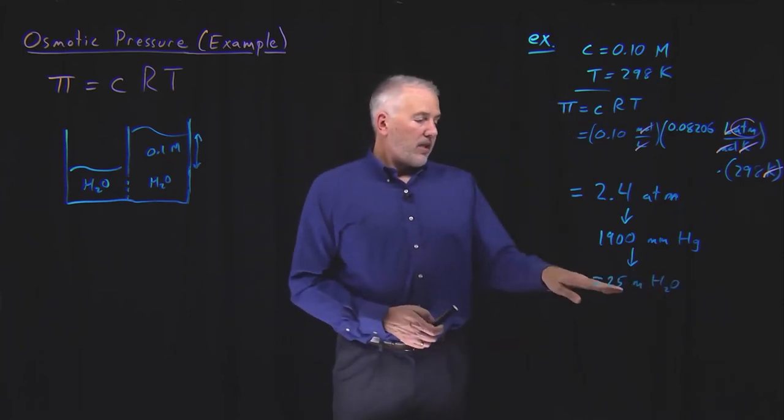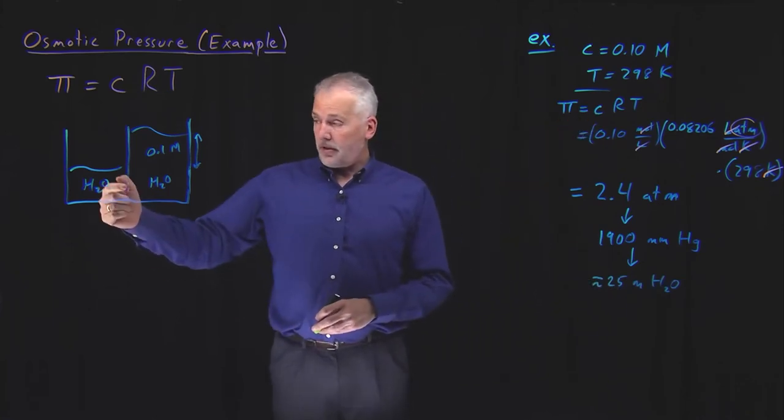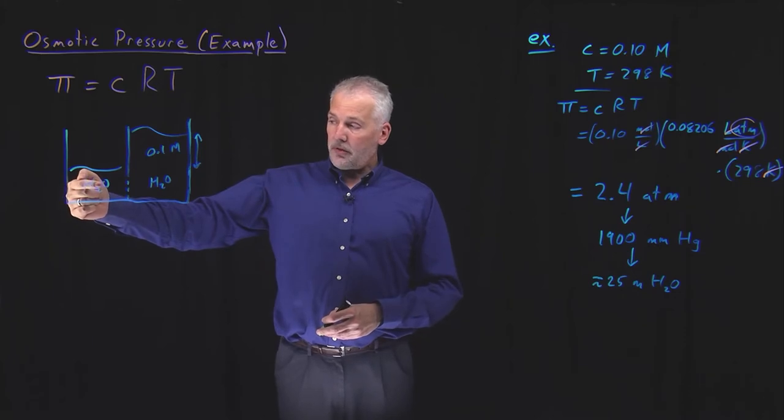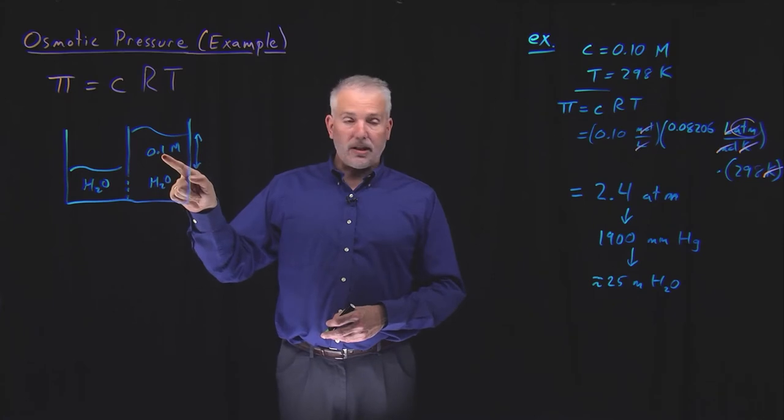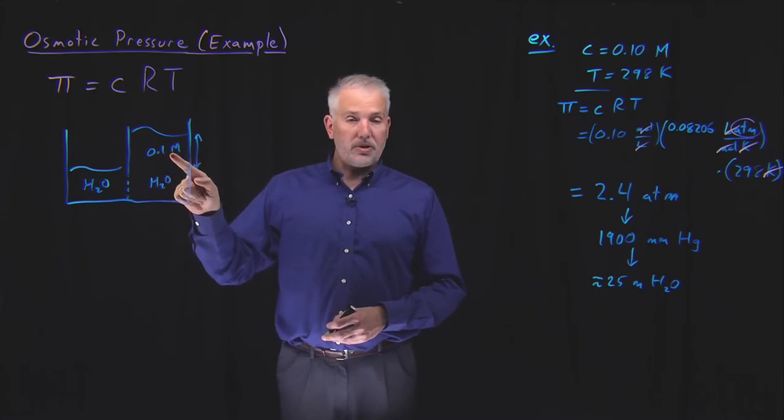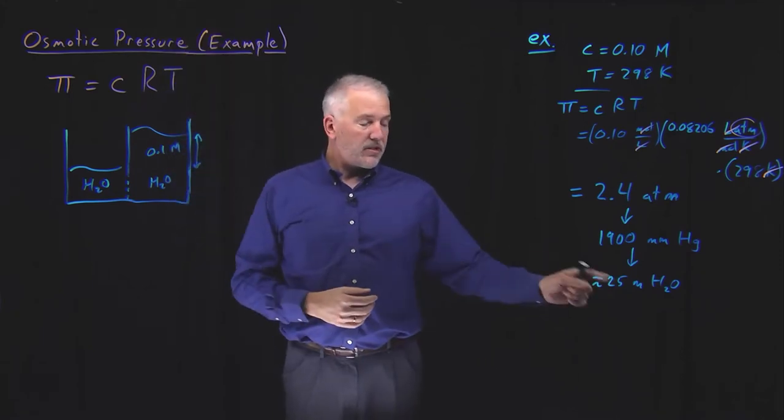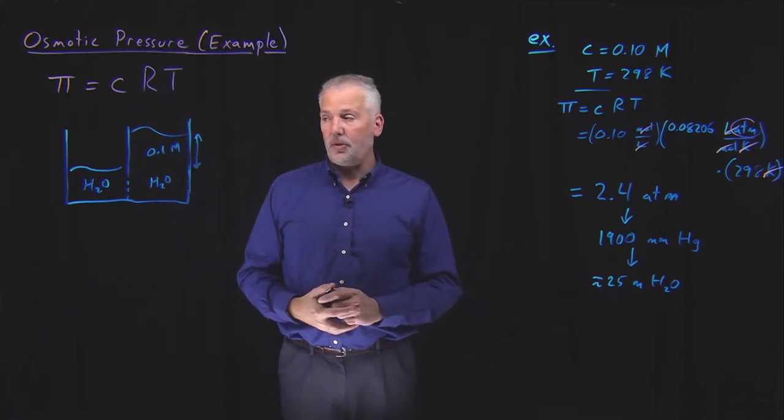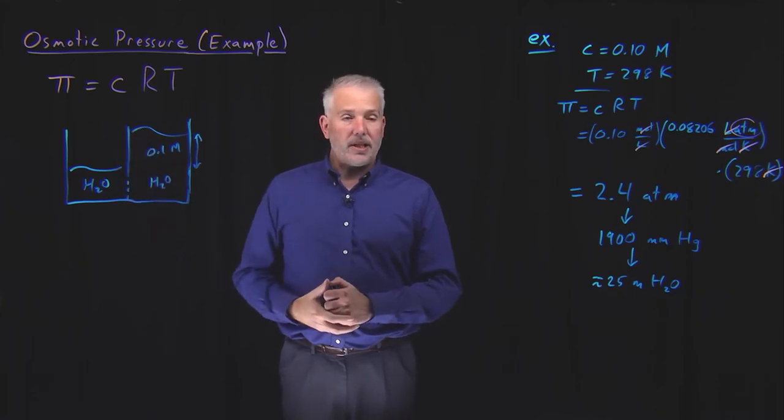So that illustrates that osmotic pressure is actually a pretty strong force. The pressure with which pure solvent will attempt to pass through this semi-permeable membrane to dilute this 0.1 molar solution will be enough to support a column of water that is a full 25 meters high. So that's much larger than just the size of two beakers in the lab, for example.